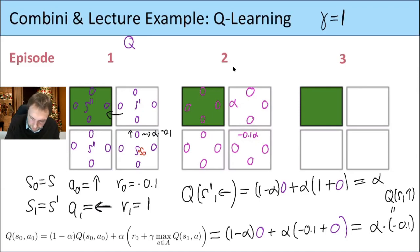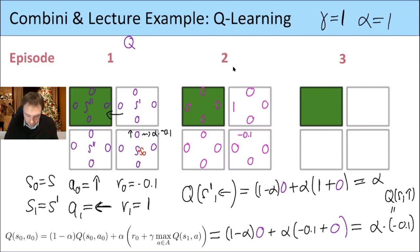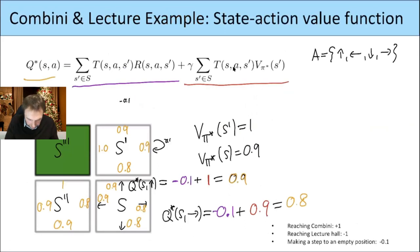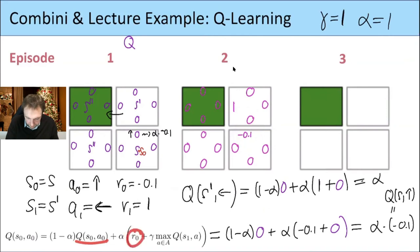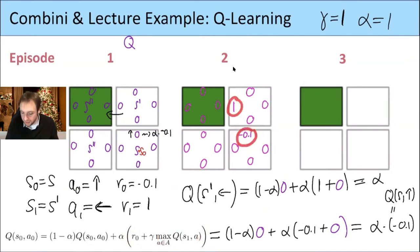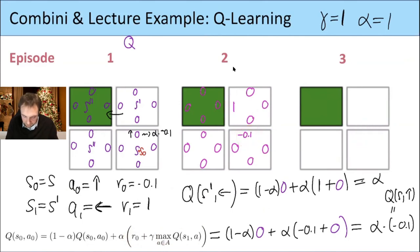If alpha equals one, then already after the first episode we have the correct values for Q at the Konbini and its neighbor. And in subsequent episodes, this update term looks at the new state, checks all directions, and decides which has the highest value. Because of the gamma factor for one step ahead, a value there will be discounted by gamma, and going two steps it gets gamma squared — which corresponds to what we include in the discounted reward.